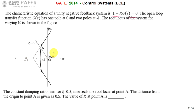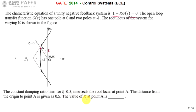The root locus is shown for varying values of K. If we draw a constant damping ratio line with ζ = 0.5, it intersects the root locus at point A. The distance from the origin to point A is given as 0.5. We need to calculate the value of K at point A, which lies on the root locus.